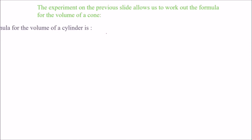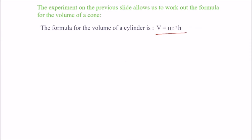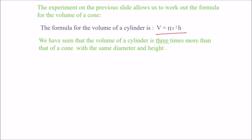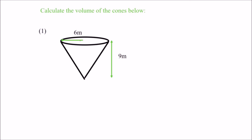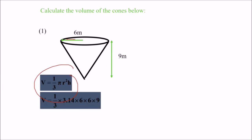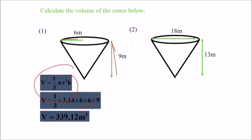The volume of a cylinder is π r² h. Since we fill the cone three times to fill the cylinder, the volume of a cone is (1/3) π r² h, where r is the radius and h is the height. For example with r = 6 and h = 9, the volume is 339.12.